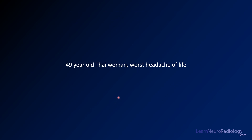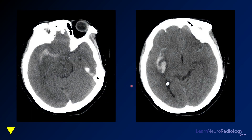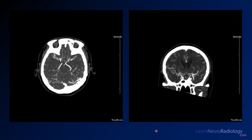Now our second case — a 49-year-old Thai woman presenting with the worst headache of her life. On non-contrast CT, the Sylvian fissures are abnormal with blood products bilaterally, and possibly a component of parenchymal hemorrhage as well. A CTA was performed since any hemorrhage requires evaluation for a vascular cause. On axial MIPs at the Sylvian fissure level, rather than seeing a nice long MCA in the longitudinal axis, you don't see much of a big vessel — just a number of smaller vessels.